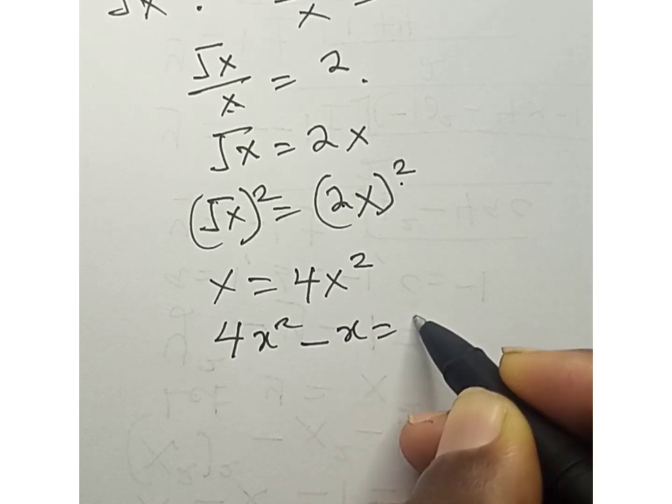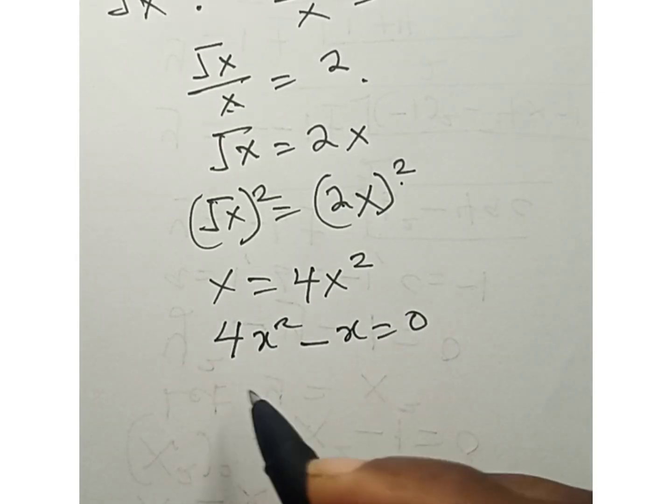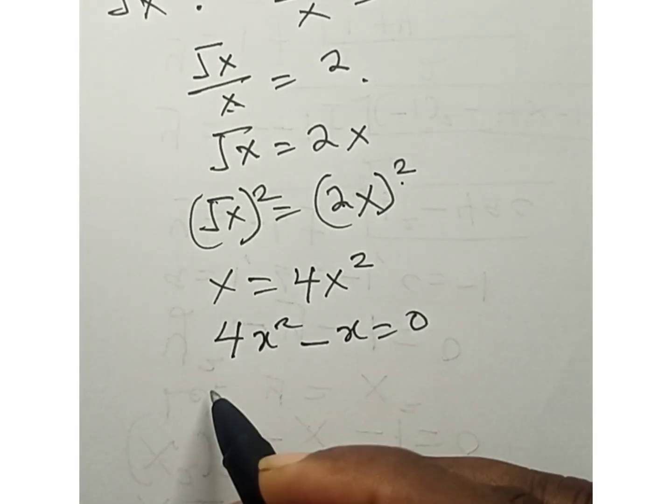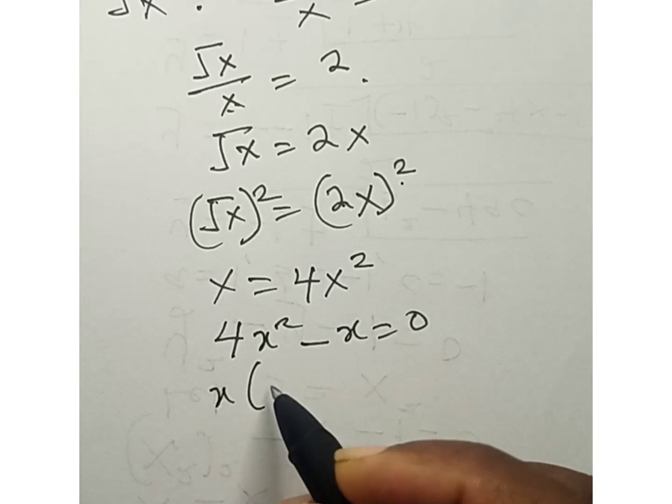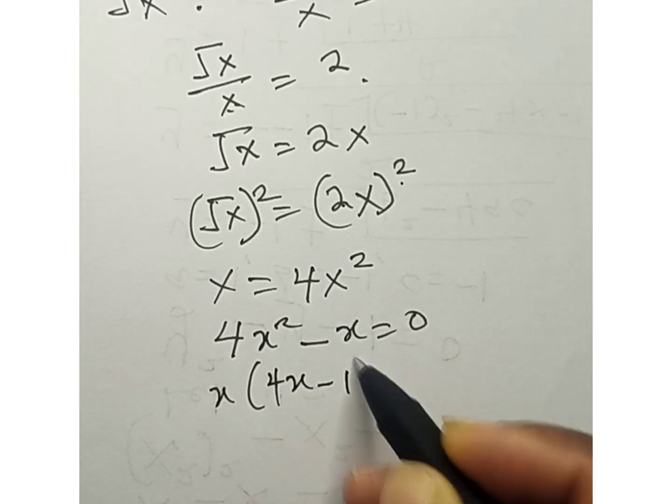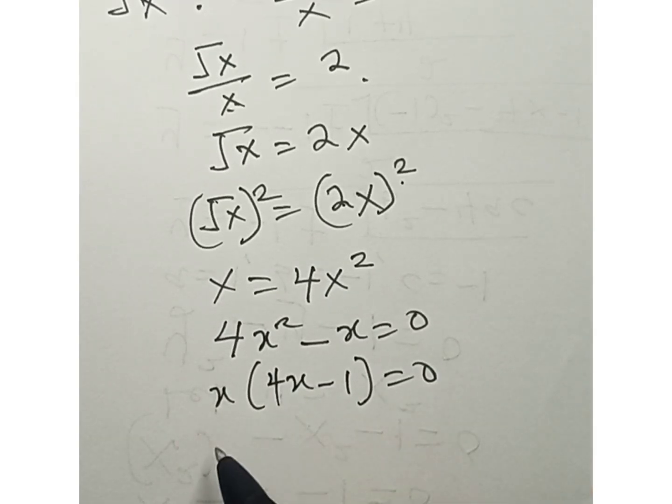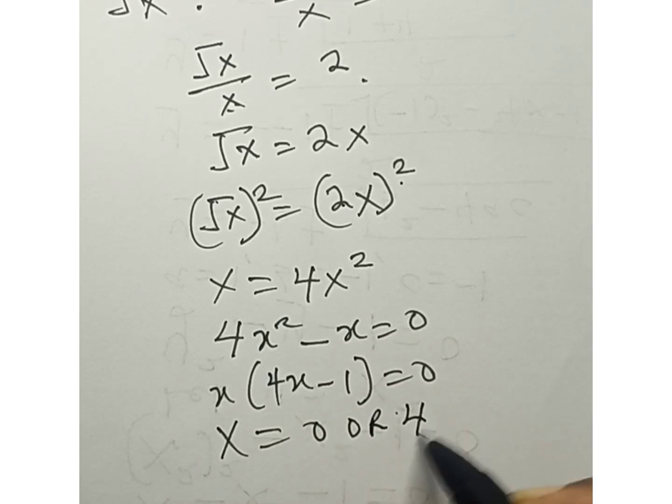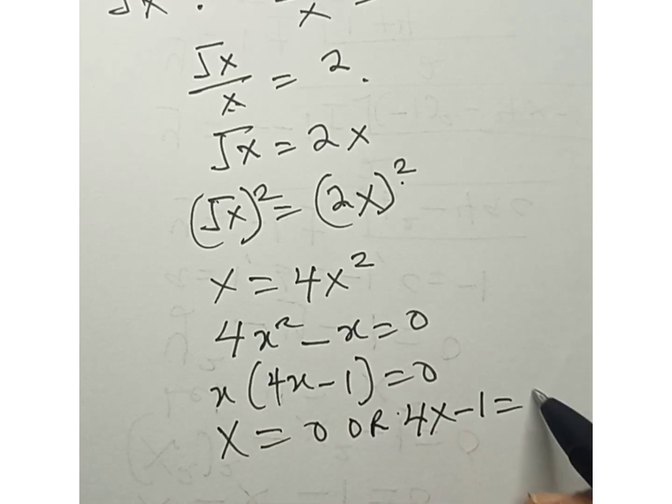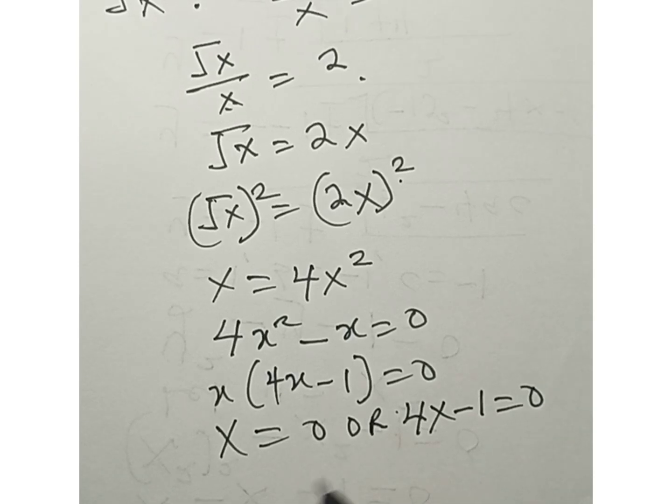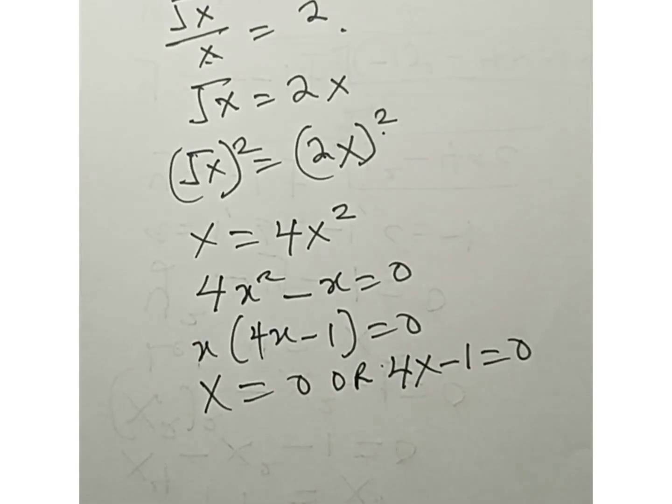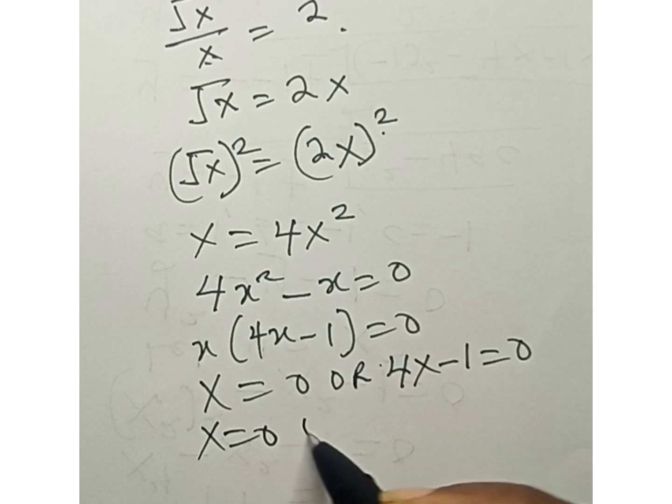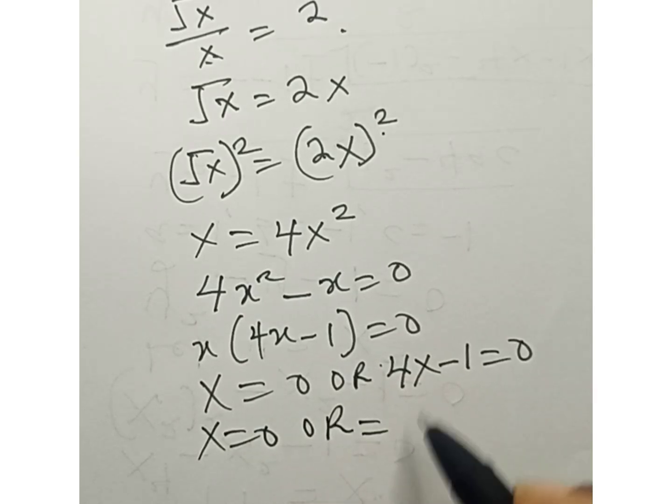minus x equals to 0. So we can have something like this now: x(4x - 1) = 0. Means x equals to 0 or 4x - 1 equals to 0. So what it simply means is that x equals to 0 or x equals to